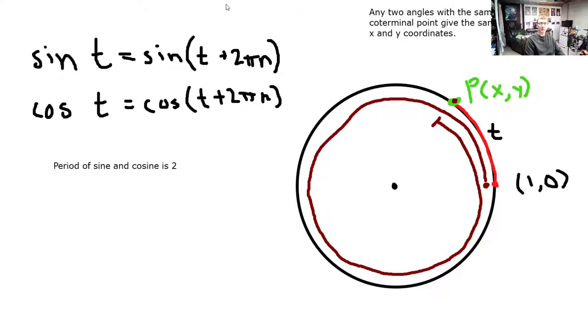This may seem trivial, but it's very important for graphing sine and cosine. It describes the periodicity of sine and cosine — they are periodic functions. So sine of t and cosine of t are equal to sine of (t + 2πn) and cosine of (t + 2πn). When we adjust our angle by adding a multiple of 2π, we're going around the circle again, arriving at the same coterminal point, so the sine and cosine are exactly the same. This shows us that the period of sine and cosine is 2π.